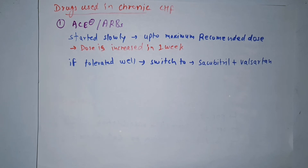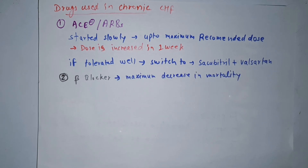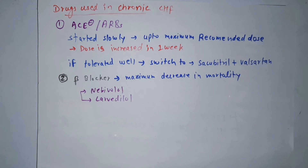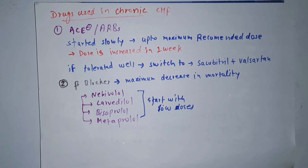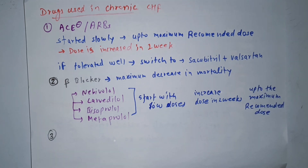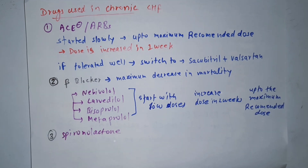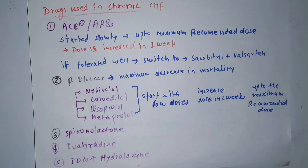Beta blockers cause the maximum decrease in mortality. We can use nebivolol, carvedilol, bisoprolol, and metoprolol. We start these drugs with low doses and increase slowly every two weeks up to the maximum recommended dose. The third-line drugs are spironolactone, then ivabradine, then ISDN plus hydralazine. In the next video, we will discuss digoxin, which is basically used for symptomatic relief.